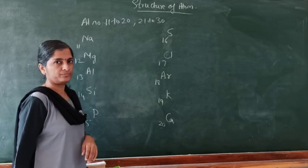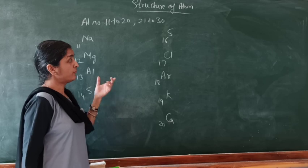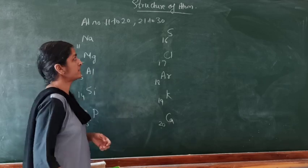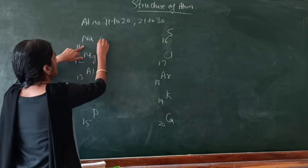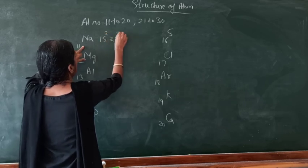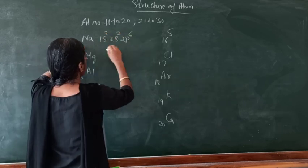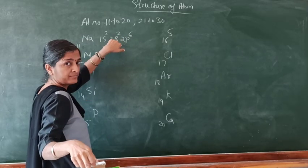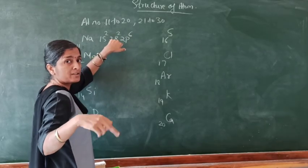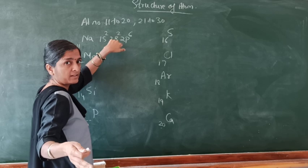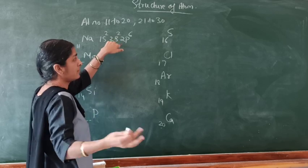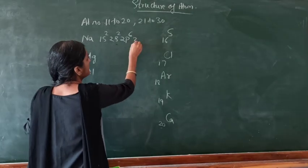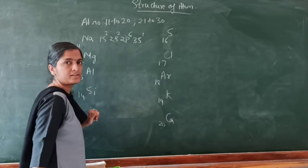Today I shall show the other way also. Yesterday I showed you how to write the electronic configuration in two ways. So here, sodium is 11. Its configuration is 1s², 2s², 2p⁶. I have told you the order of the orbitals and how the energy of the orbitals goes on increasing — in that way you fill up the orbitals. So 1s², 2s², 2p⁶. After 2p, it is 3s. So it is 3s¹.